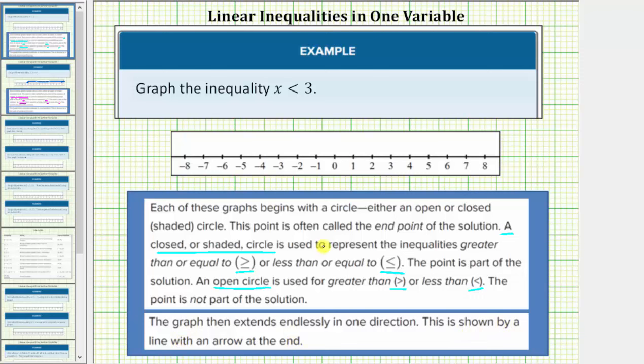So going back to our example, we have x less than 3, and therefore 3 is not part of the solution. So we make an open circular point on 3. And because it's x less than 3, we draw an arrow to the left where our values are less than 3. This is the graph of x less than 3.